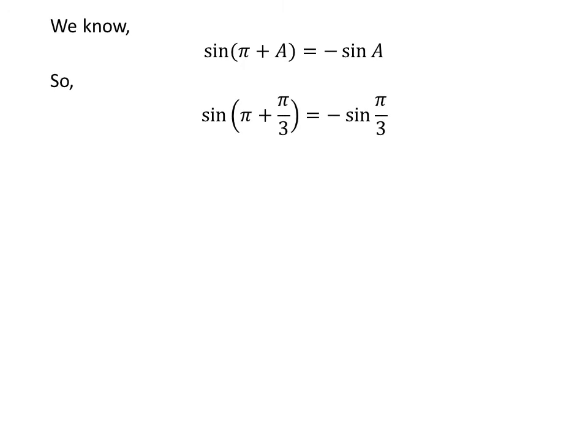Application of the above identity implies that sine of pi plus pi upon 3 is equal to minus sine of pi upon 3. As pi plus pi upon 3 is equal to 4 times pi upon 3, so sine of 4 times pi upon 3 is equal to minus square root of 3 upon 2.